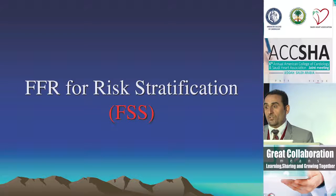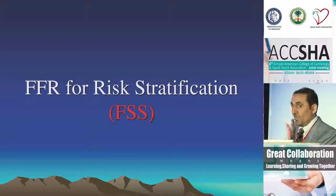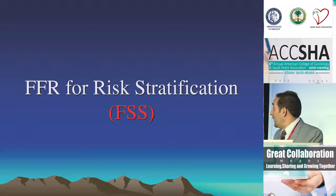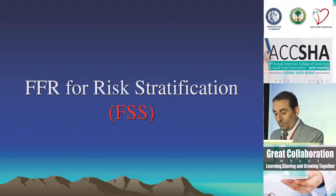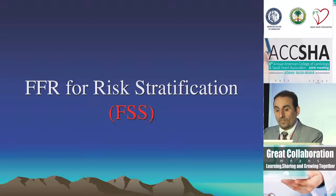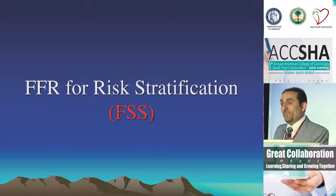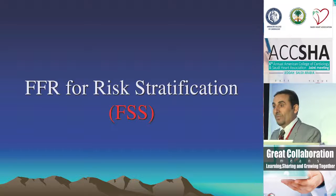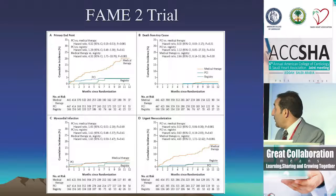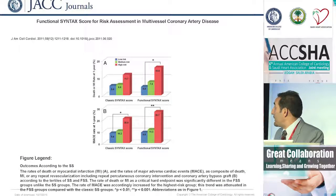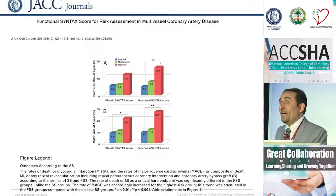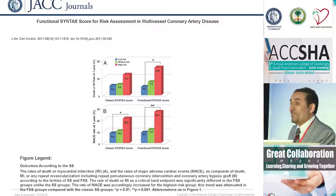For risk stratification — you know the syntax score. As Dr. Wakari discussed, the higher your syntax score, the better served you are with CABG; the lower, perhaps angioplasty. Could we refine that score? They did — it was called the functional syntax score, a subgroup of the FAME trial. Patients were classified into low, moderate, and high risk by syntax score. Almost more than one-third of those classified as moderate-to-high risk were reclassified as low risk using functional syntax scoring.